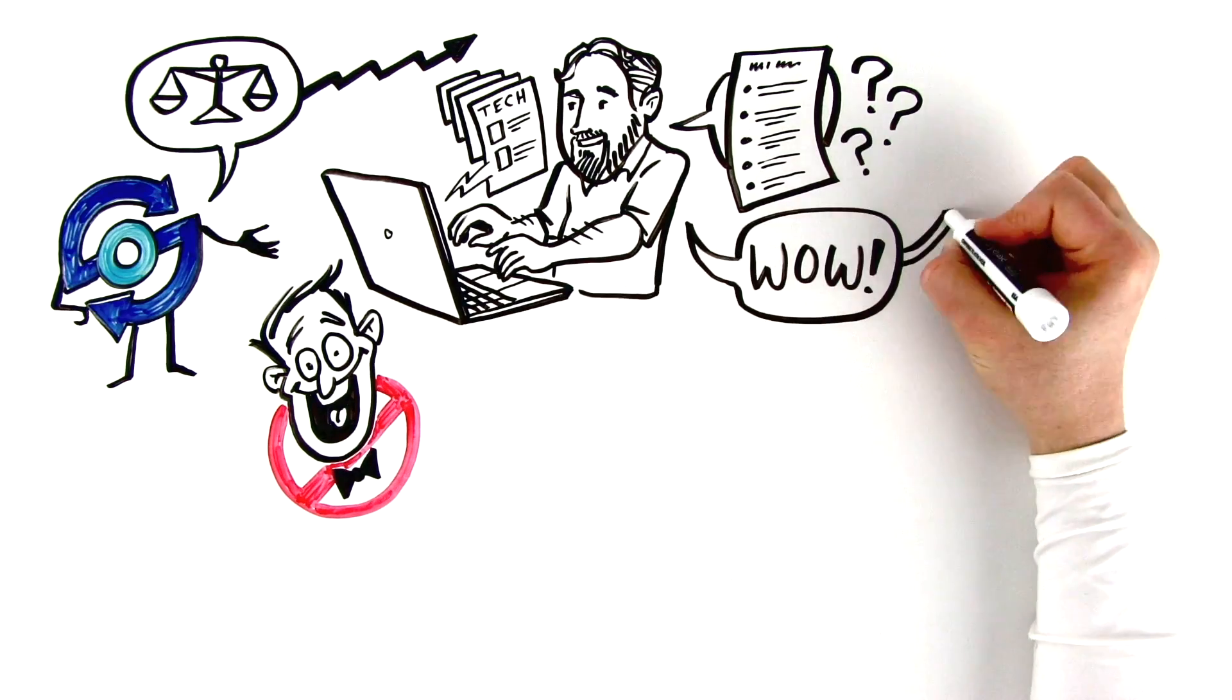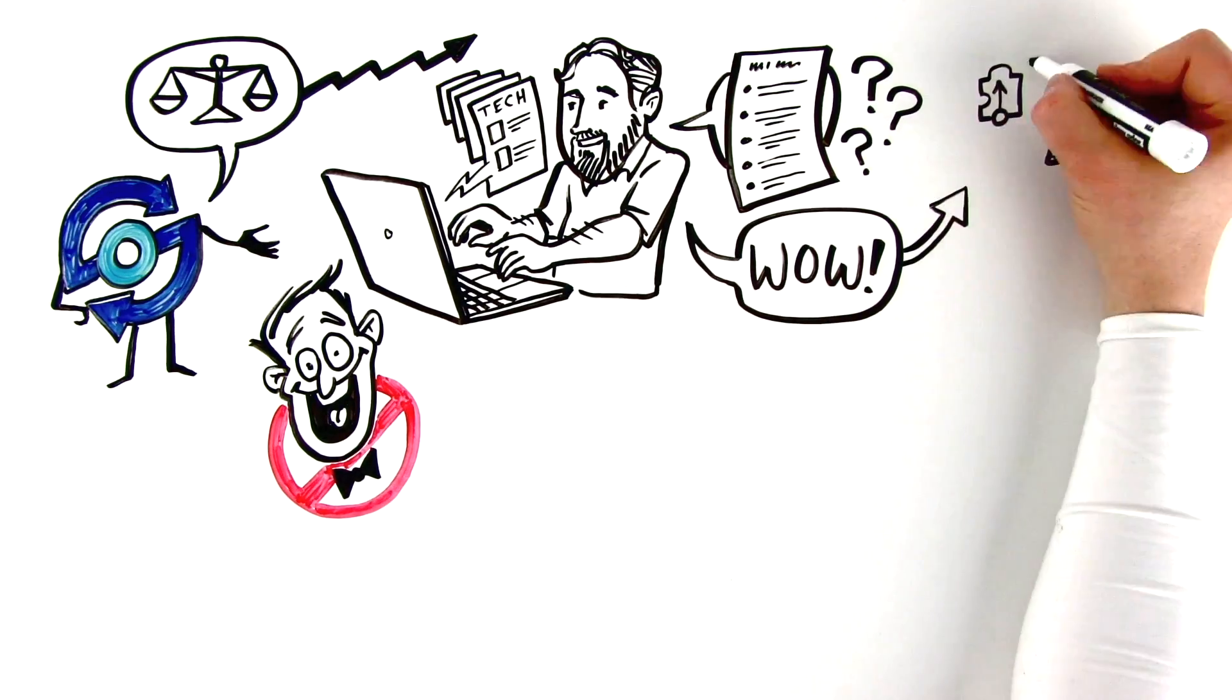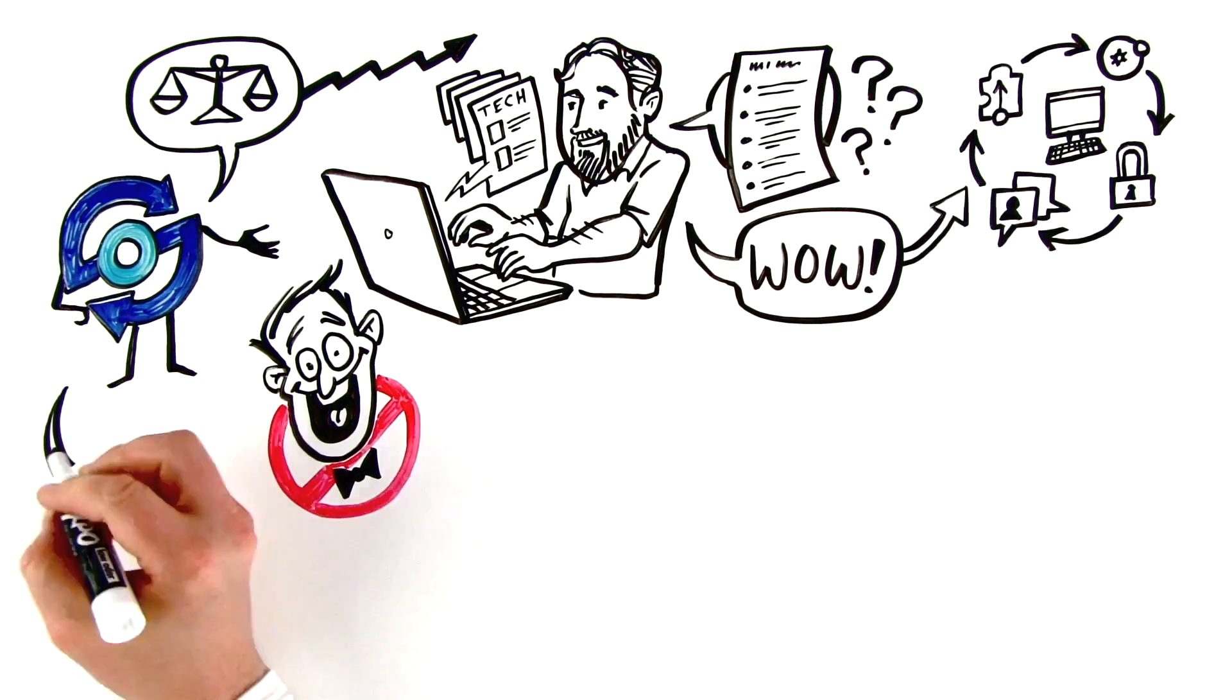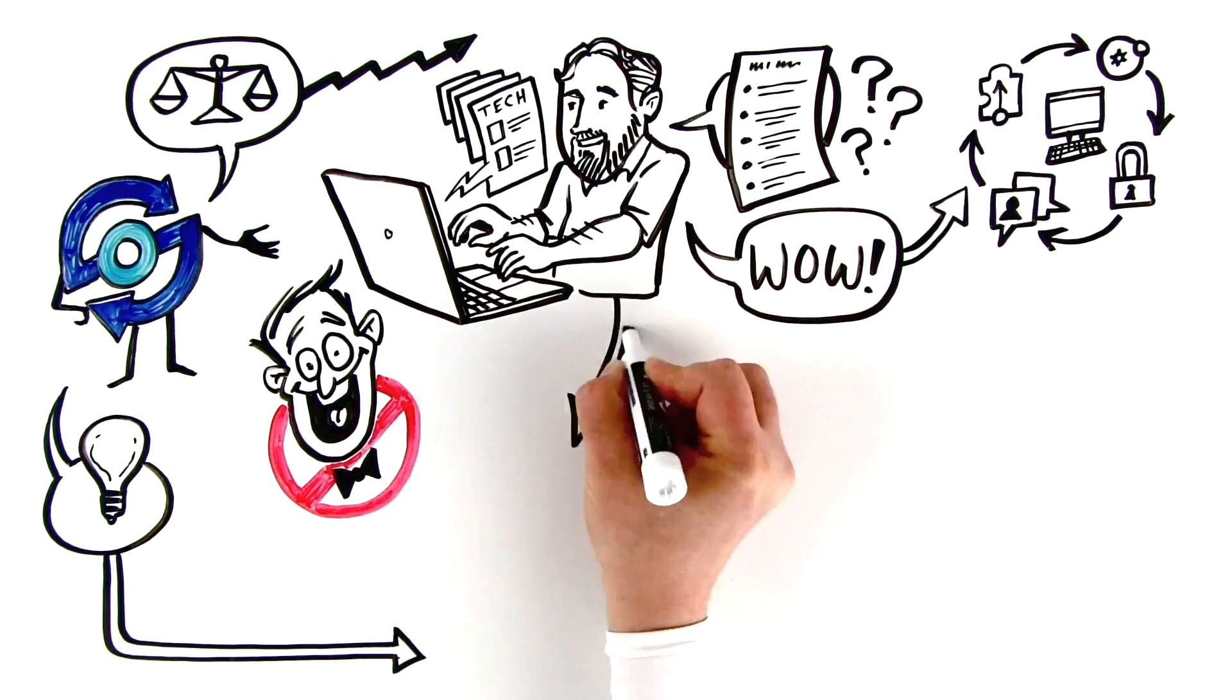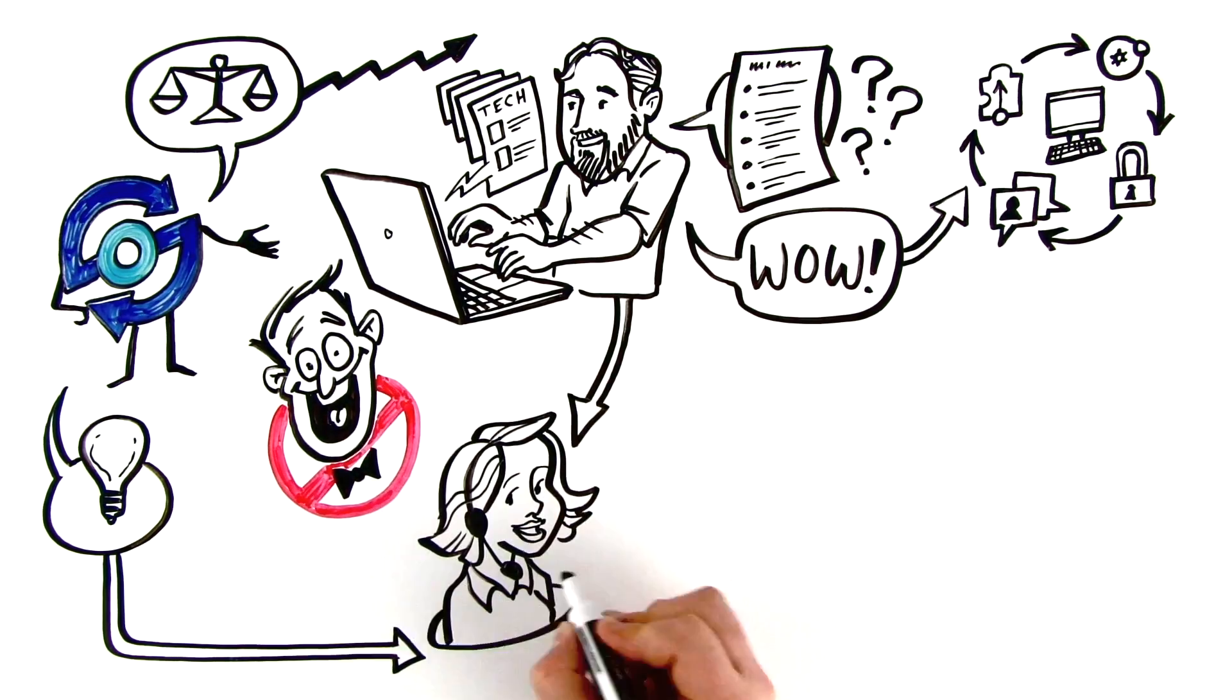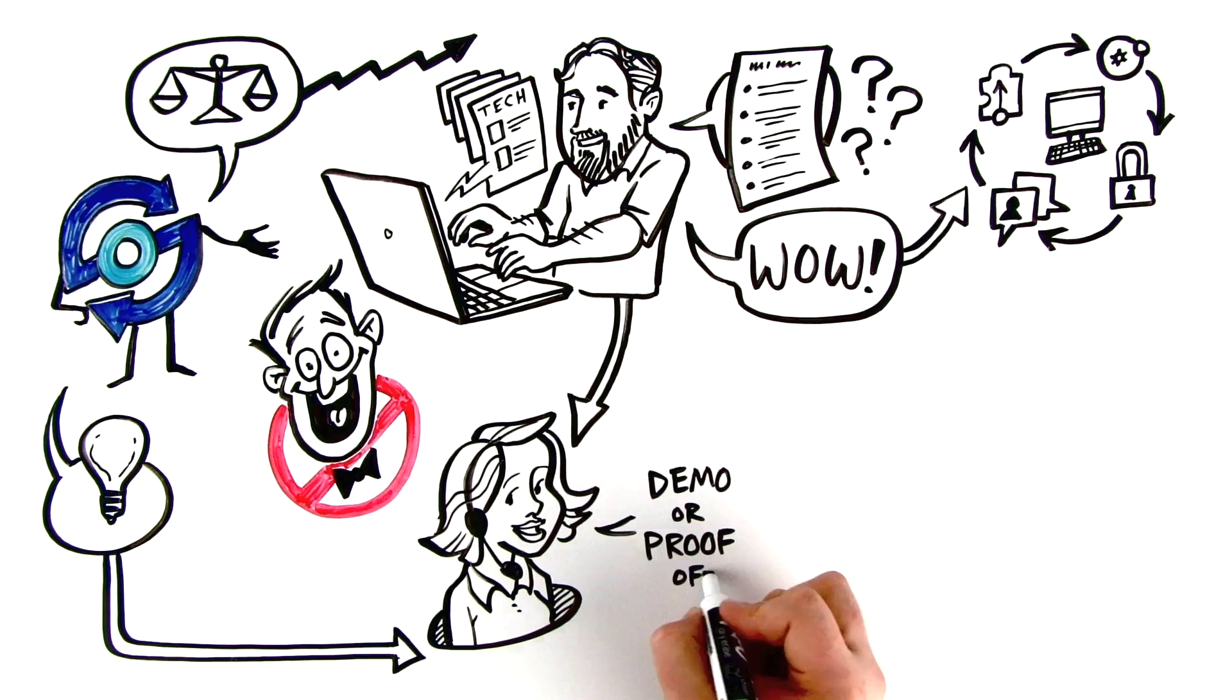He's informed of solutions he's never heard of before, and they even discuss upcoming products and technologies. With a clear idea of what Jeff needs, AppDetails connects him directly with product specialists at the companies that best meet his requirements for a demo or proof of concept.